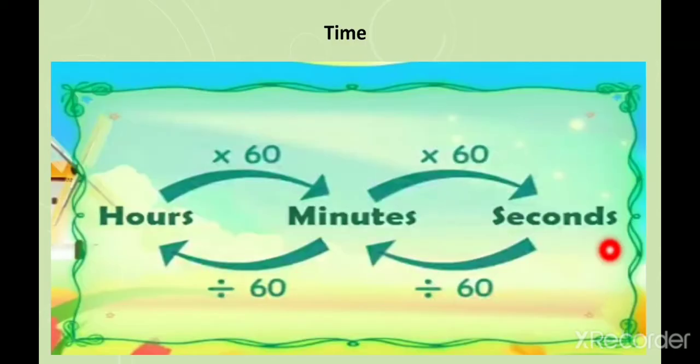Now, the next topic is conversion of time into hours to minutes, minutes to seconds, or vice versa, seconds to minutes and minutes to hours. If you want to convert 1 hour into minutes, you have to multiply by 60 because in 1 hour there are 60 minutes. If you want to convert 1 minute into seconds, you multiply by 60 because in 1 minute there are 60 seconds.